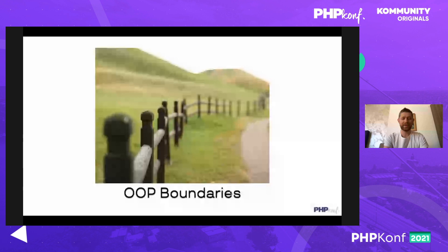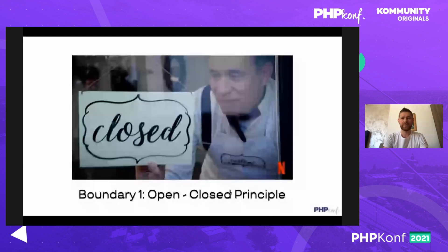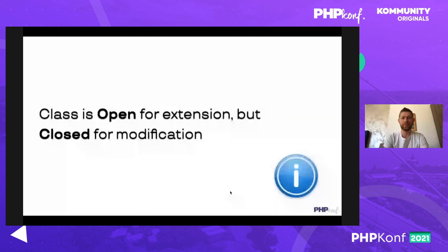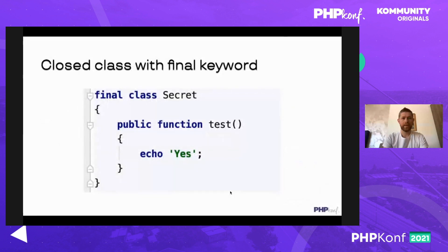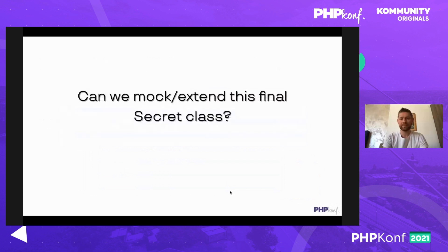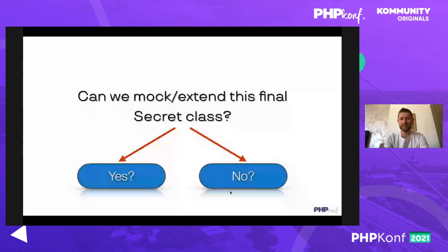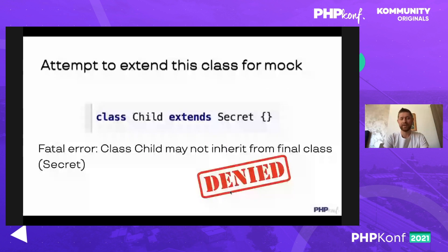Let's check our existing object-oriented paradigm boundaries. The first one is well-known: the open-close principle — a class should be open for extending but closed from modification, because we really want to protect what's inside while still having the ability to extend our class with new features. A simple example is a final class with the final keyword — we cannot extend it. If we want to create a mock for a unit test and try to extend it, most people believe it's not possible.